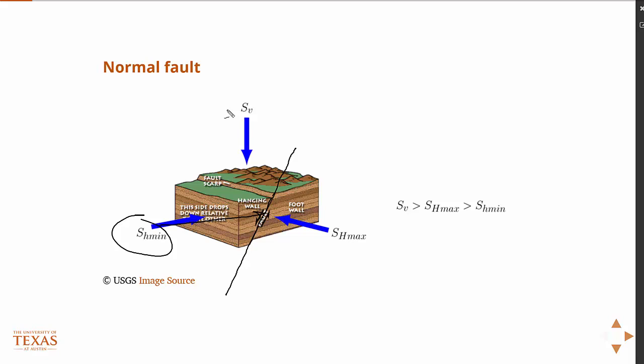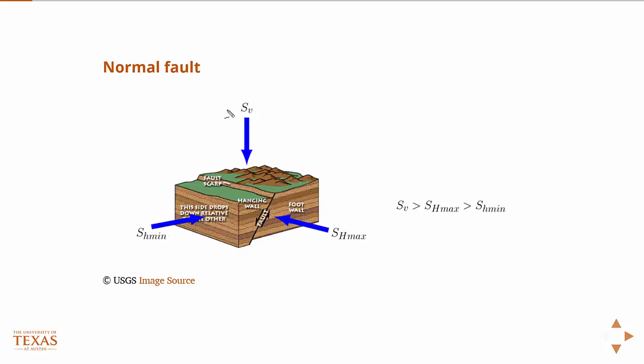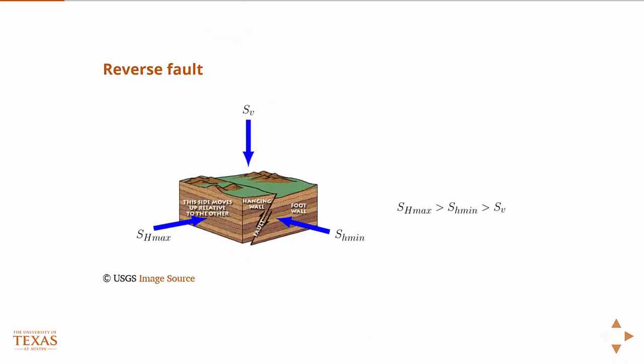So then we have the reverse fault, which is just the opposite, right? So again, in this case, the vertical stress is less than the two horizontal stresses to accommodate the motion of the hanging wall moving up, right? And again, just like I said before, the hint to remember the reverse fault is that the hanging wall moves in the reverse of gravity.